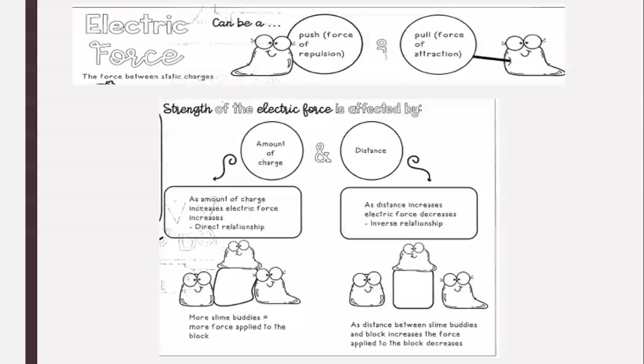And then finally, electrical forces - this is our push or a pull. So we've talked about force before: force equals mass times acceleration. We're going to look at it just slightly differently. So this can be created with a push, a force or a repulsion, or a pull, a force of attraction. So negative or positive. The strength of the electric force is affected by the amount of charge and the distance. Force equals mass times acceleration. So kind of that same idea.